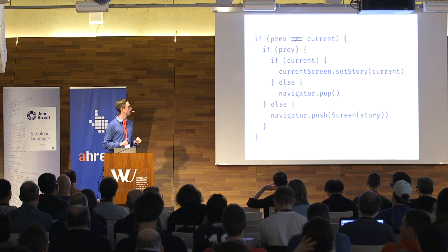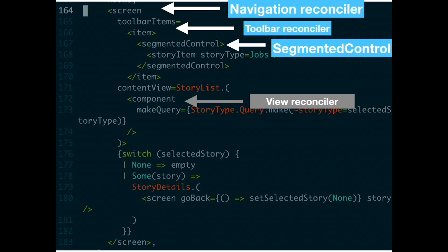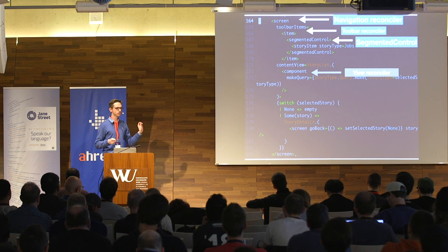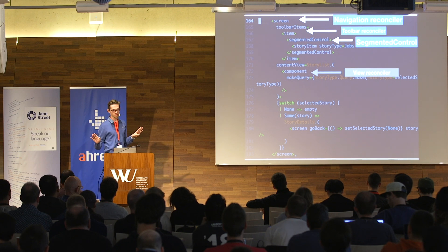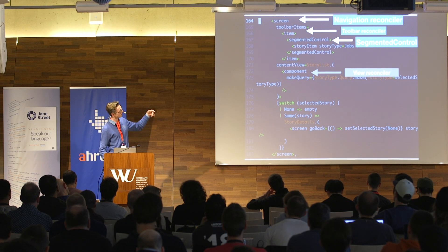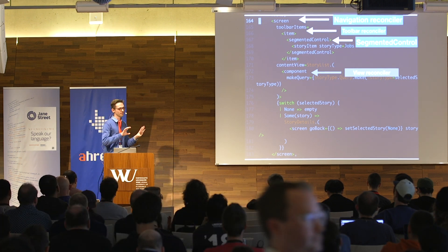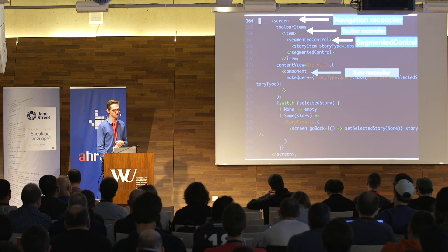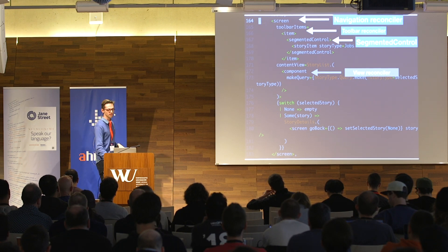What's interesting is that when you write React code, you express a tree of views, but when you think about it, your application is more like a graph. When you have navigation and go from one screen to another, you don't nest another view — you go to a sibling. You can express this with nested reconcilers: you have a navigation reconciler that manages going between siblings, and content reconcilers that manage the views themselves.